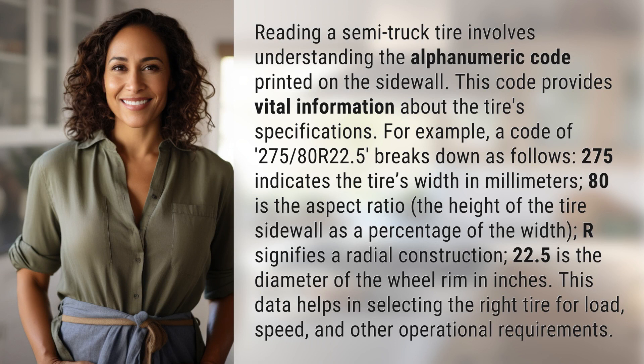For example, a code of 275/80 R22.5 breaks down as follows: 275 indicates the tire's width in millimeters, and 80 is the aspect ratio.